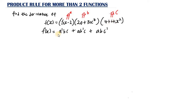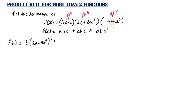Now I'm going to apply this formula. So f prime of s equals: first, A prime — the derivative of 5s minus 2 — which gives us 5. We then multiply this by the remaining functions B and C. So this is 5 multiplied by (20 plus 3s cubed), then multiplied by (4 plus 4s squared). Then plus the first function, which is A, so 5s minus 2.